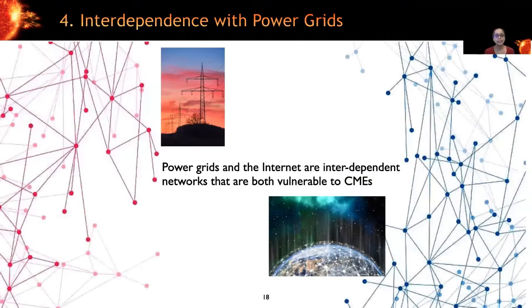Finally, the internet and power grids are both designated as uniquely critical because all other critical sectors rely on them. And they're also interdependent on each other. And both are susceptible to failures due to solar superstorms. So we need to study the joint failure characteristics of this complex interdependent system to better understand their failure characteristics. So these are just a few of the open problems and there are many more discussed in the paper.